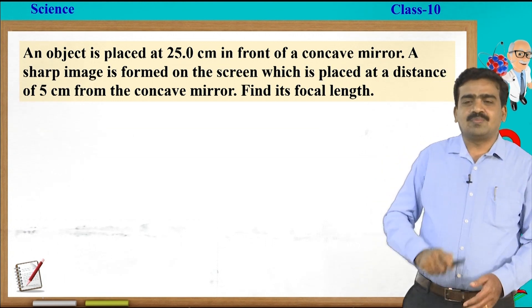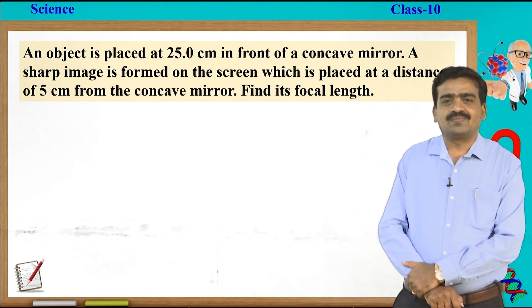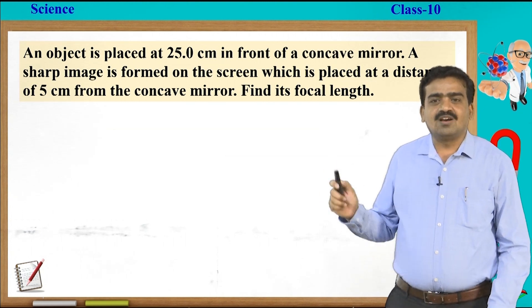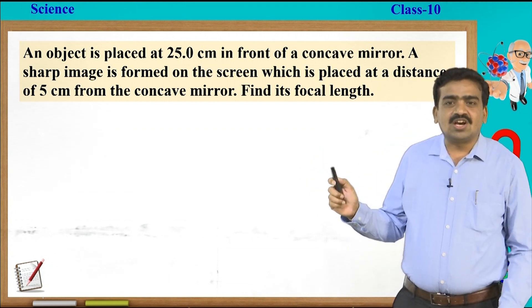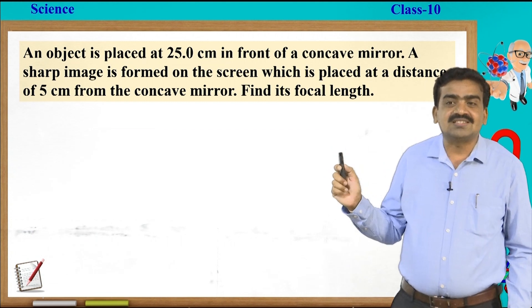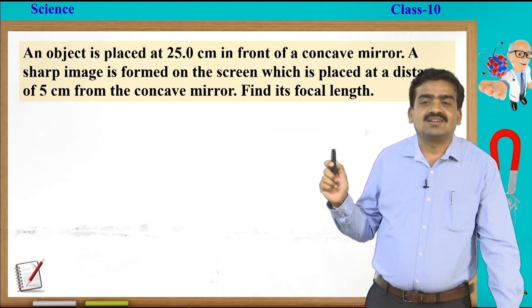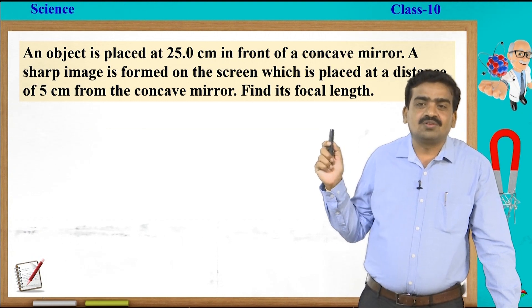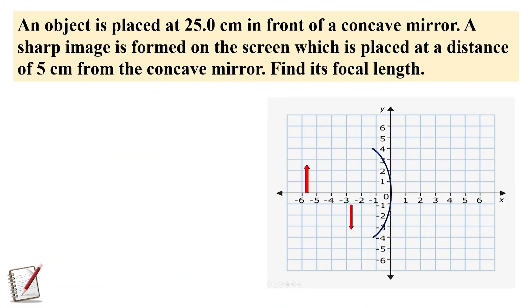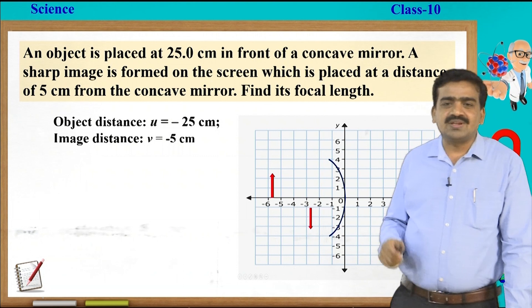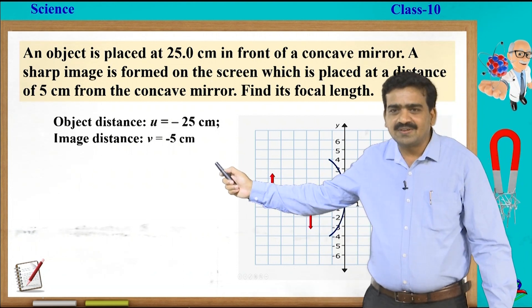Now let us solve a problem based on concave mirror. The question is: an object is placed at 25 centimetres in front of the concave mirror. A sharp image is formed on the screen which is placed at a distance of 5 centimetres from the concave mirror. We have to find the focal length. Using the diagram, the object is on the negative part of the x-axis and the image is also formed on the negative part of the x-axis. So the values are: object distance u = −25, image distance v = −5.